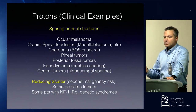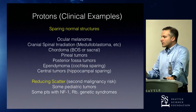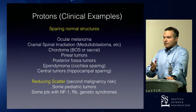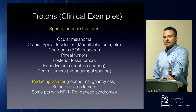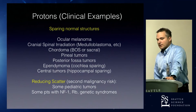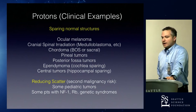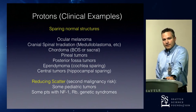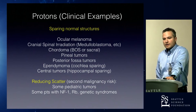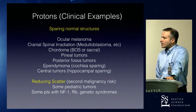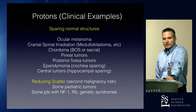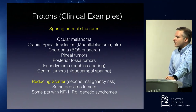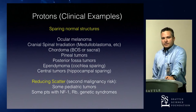The second reason to use protons is reducing low-dose scatter. In adults, it's not that important clinically. In children, they have more years to live and are intrinsically more radiosensitive — if you look at second malignancy rates, a 20-year-old has dramatically higher rates at 15 years compared to a 40-year-old. Stanford looked at Hodgkin's patients versus breast cancer, and age over 30 showed significantly less risk. Also, patients with genetic syndromes like NF1, retinoblastoma, or Li-Fraumeni syndrome warrant low-dose scatter reduction.